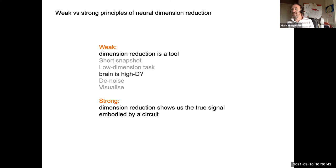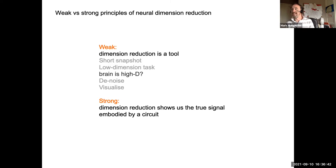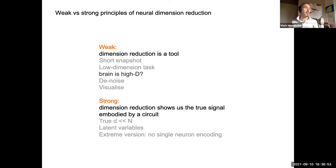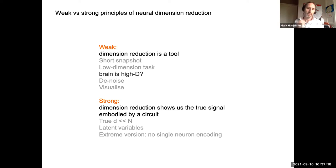The strong principle is the claim that dimension reduction shows us the true signal embodied by a circuit — that the true thing the brain gets to work with is actually a signal that has many fewer dimensions than neurons. This is what people talk about when discussing coding of latent variables: hidden inside the activity of a large population of neurons, their joint activity encodes latent variables — some variable that only exists being coded between multiple neurons.